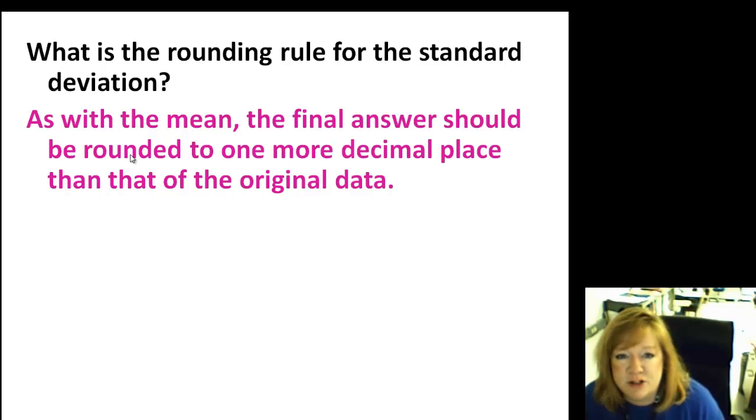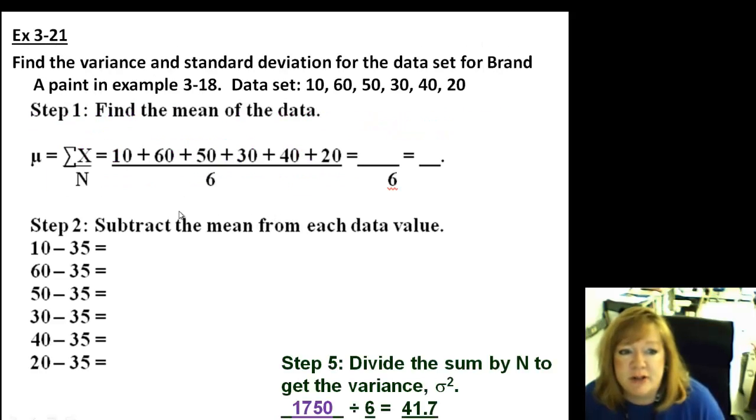Since the owner's salary is included in the data, the range is a large number. A more meaningful statistic to measure the variability would be the variance and the standard deviation. And one thing I want to warn you is just like the mean, it's one more decimal place than that of the original data. So let's get started. Find the variance and standard deviation for this data set. Step one, you have to find the mean of the data. And notice they use the little mu symbol, because this is all of the brands they tested. So they add them all up and divide by six, so you get 210 divided by six, which we already know is 35.